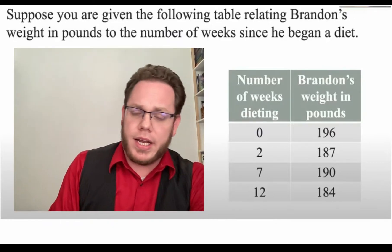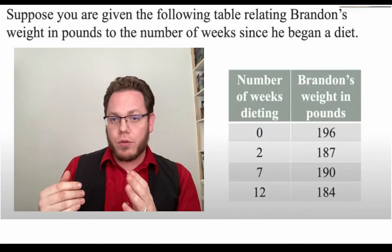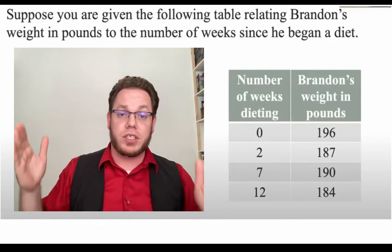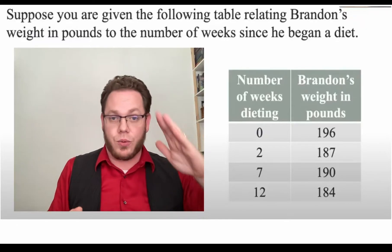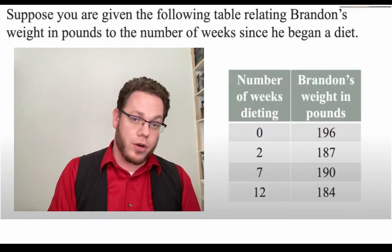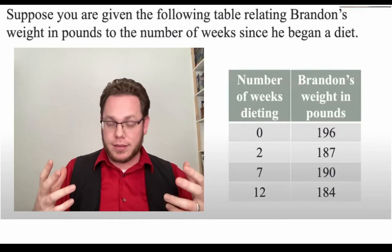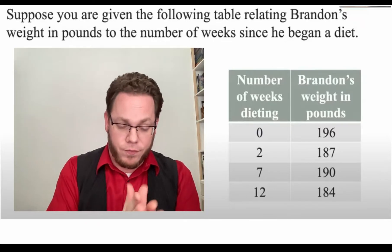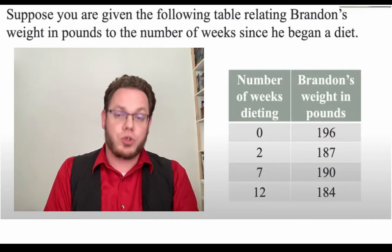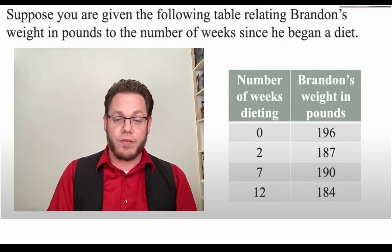Let's imagine we were plotting this over time. We've got the number of weeks he's been dieting and his weight in pounds. From start to finish, he's doing this for about 12 weeks and his weight fluctuates. Let's pretend that week zero is February 1st. If we're trying to tell the story of these numbers, two weeks into this process of dieting, he's lost nine pounds. That's substantial — four and a half pounds a week.